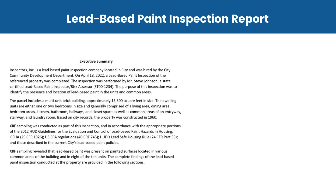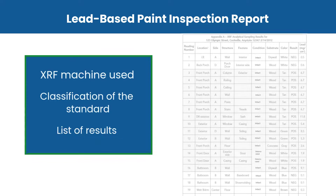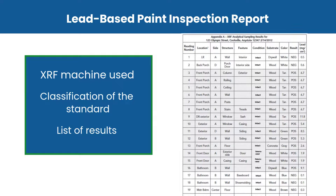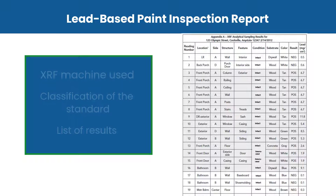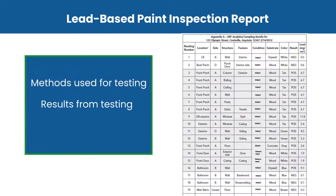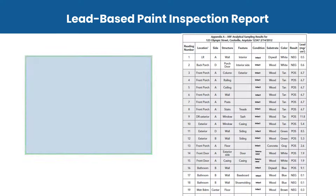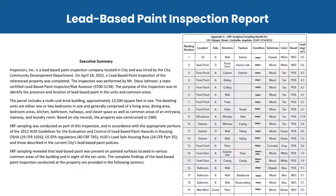The report includes an XRF Sampling Summary to describe the XRF machine used, the classification of the standard, and a list of results. The report also includes information about the methods used for testing and the results from testing. Findings contain all collected test data and are generally provided as a listing of data accompanied by an introduction, footnotes, floor plans, and supplemental pages to explain the information presented.